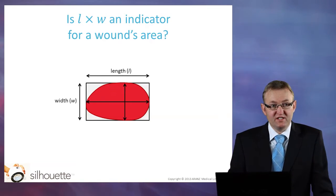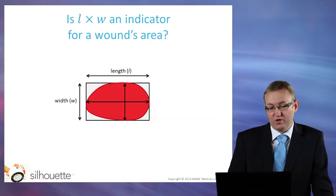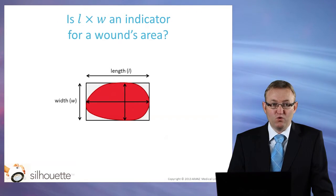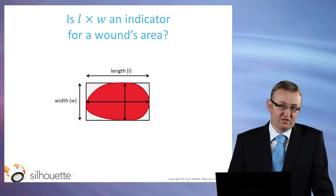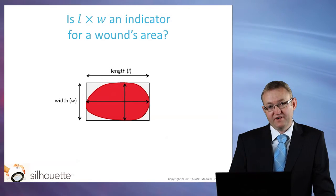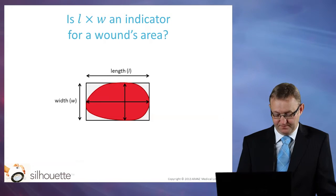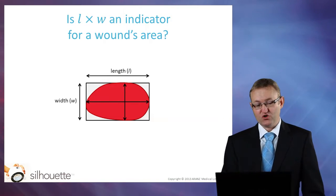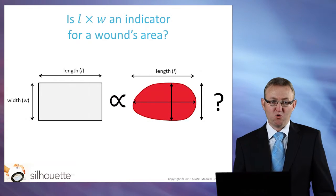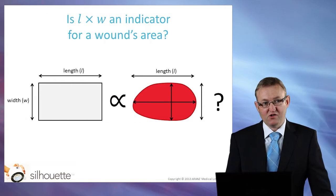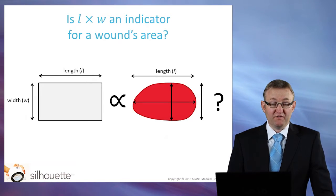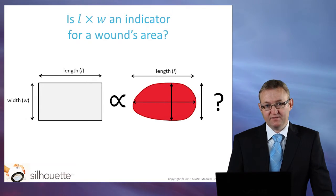So the question is, can length times width be considered an indicator for a wound's area? In other words, is length times width a valid area index? Now, for this to be true, there would need to be a relationship — a proportionality — between the length times width measurement and the true area of the wound. But unfortunately, this is just not the case.